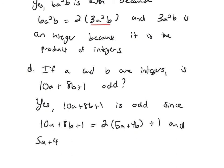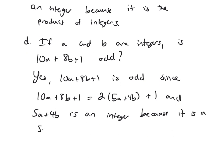And 5a plus 4b is an integer because it is a sum of products of integers. And it's a sum of products of integers, so it has to be an integer.